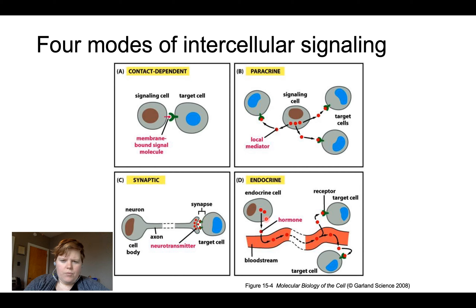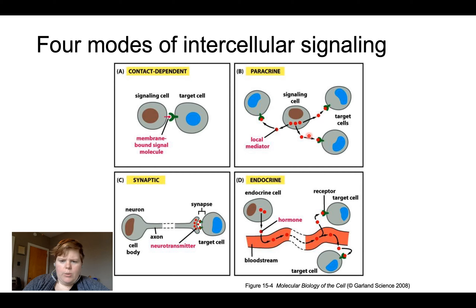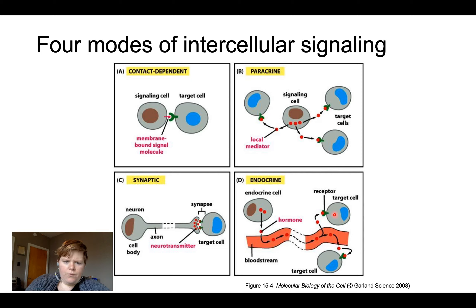Another type is paracrine signaling — a local signal where mediator molecules don't travel very far, kind of like local politics, local area concerns. This is compared to endocrine signaling, where hormones can travel throughout the entire body. So signals can travel very far and wide with endocrine, while paracrine is much closer to home. Keep in mind that different signals travel at different speeds and different distances.